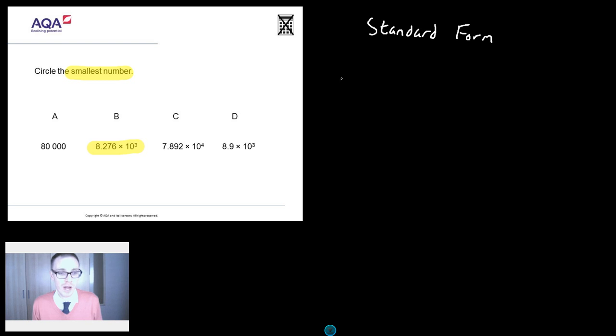So I have two options. I can either write everything as a normal number, a non-standard form number, or I can write everything in standard form. I'm going to go for the long way around, so I think it's going to allow me to address a few issues. And that's to write everything as a normal number. So it starts off nice and easy, because A is already a normal number, 80,000. Nice.